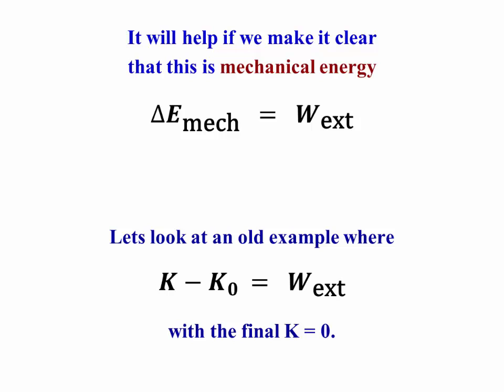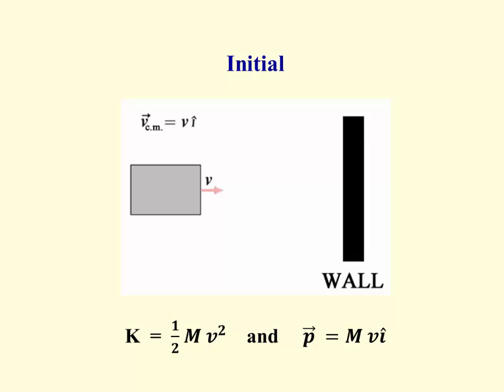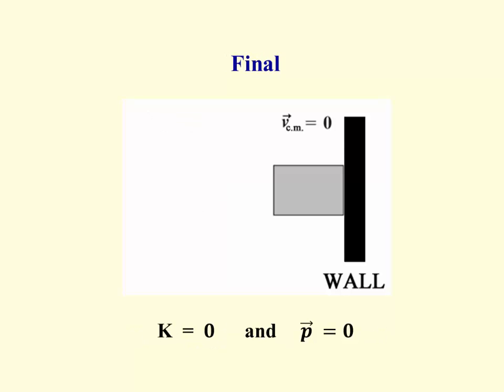Now let's use this to look at an old example, a very familiar example, where we bring an object to rest by doing negative work on it. We've got a box here with mass M moving to the right. It's got a kinetic energy ½Mv² and a momentum of Mvi. It hits the wall and stops, so its kinetic energy goes to zero and its momentum goes to zero.